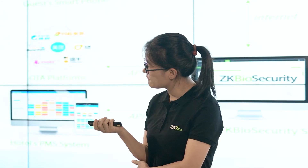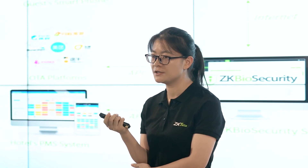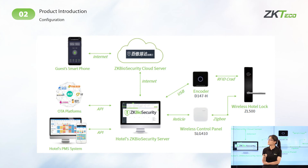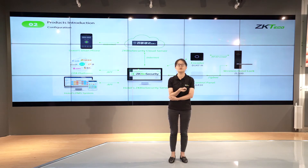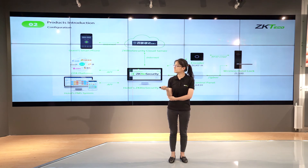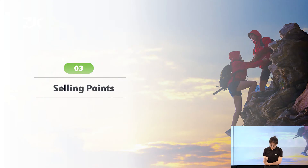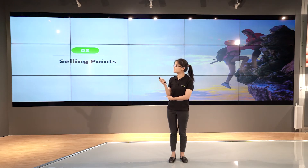The last part is the configuration of the hardware solution, showing how each part interacts with each device, like how the lock interacts with the software. What I want to emphasize is the API. We offer an open API for you to integrate with different third-party platforms like PMS and OTA platforms, as based on our research, API integration is very important for large or high-end hotels.